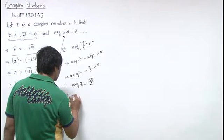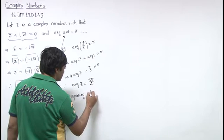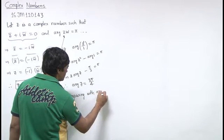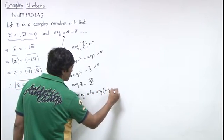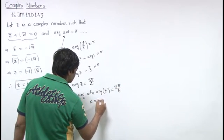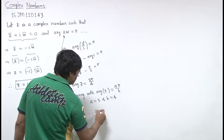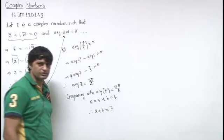Comparing with a pi upon b, since the argument of z is 3 pi by 4, we have a equal to 3 and b equal to 4. That means a plus b is 7. This is the answer.